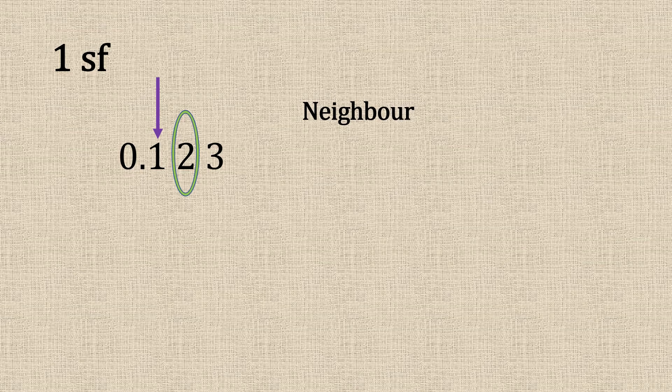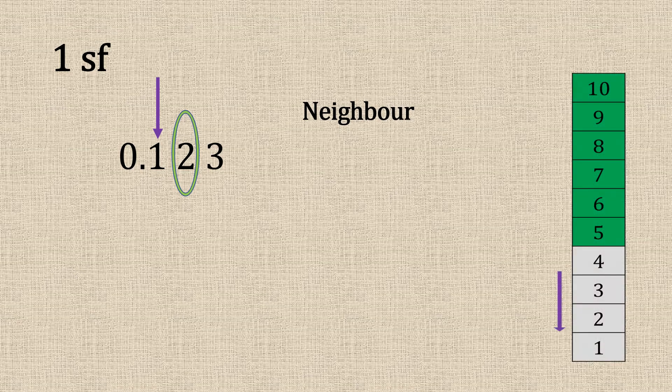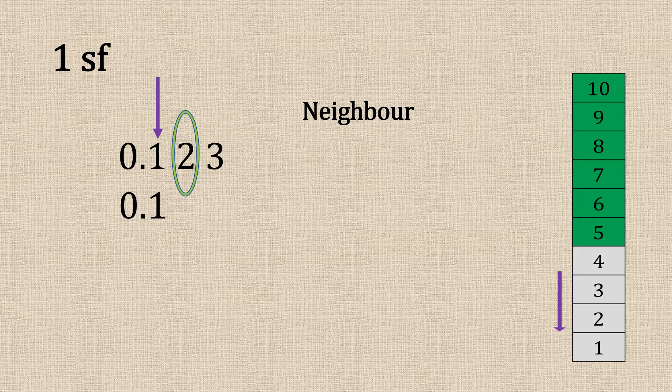One significant figure. 0.123. One is our first one. The neighbour is two. So it's four or below. So we let it go. Leave it at 0.1.